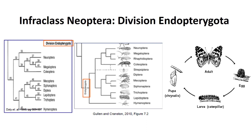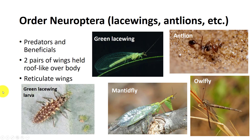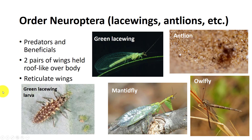They have a wingless larval stage that looks different from the adult. Unlike hemimetabolous development, the larvae and the adult will eat different types of food. The pupal stage is a non-feeding stage.